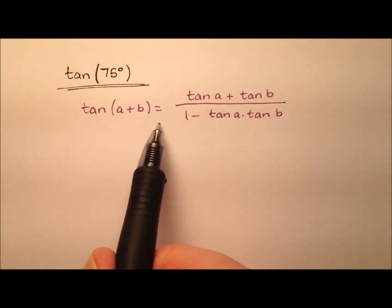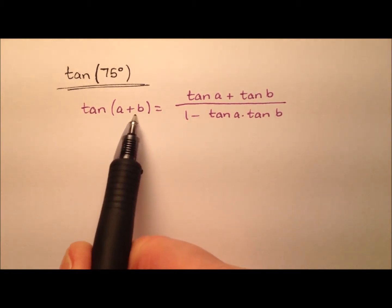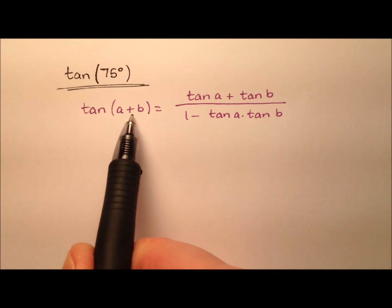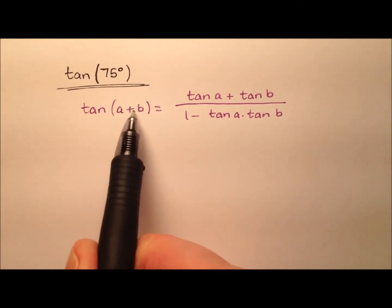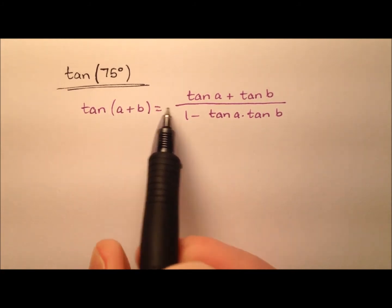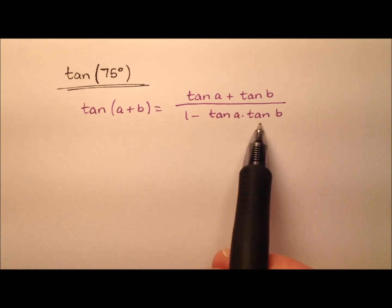In this first approach, we're going to look at using the sum identity for tangent. So we need two angles, A and B, that are easy to work with because we're going to be taking the tangent of those values.